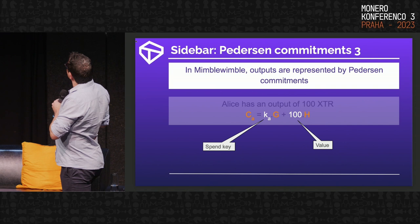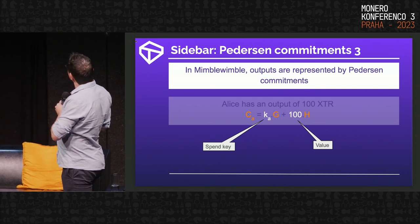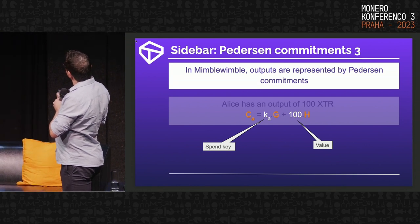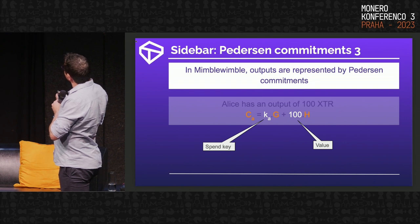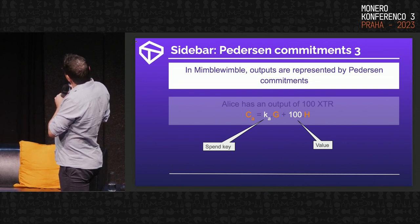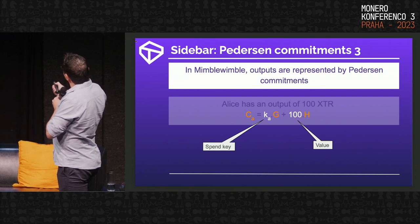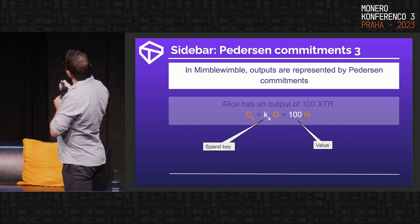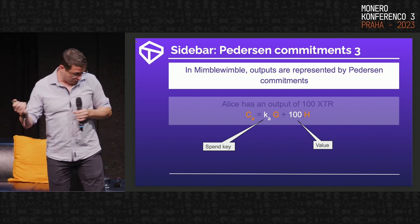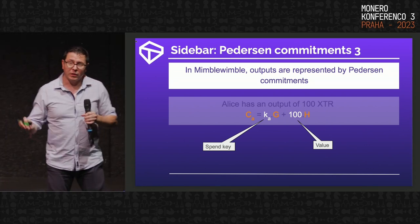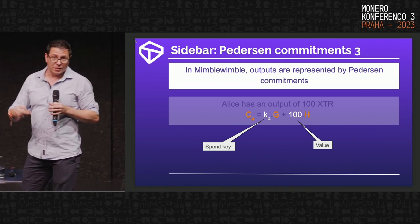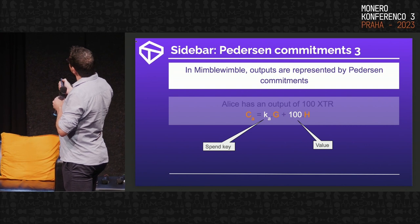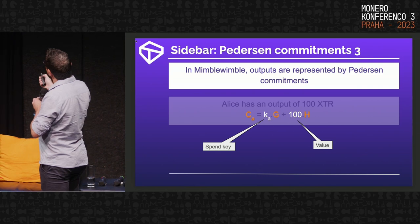A Mimblewimble output is represented by a commitment: the sum of a spend key times G plus a value times H. The spend key is what lets you spend the output. What we expose on the blockchain is just the sum. Once I've added these two together, there's nothing you can do to separate them — it's like saying two numbers in my head add up to a million: what are the two numbers? The sum here goes up to an astronomically huge number, so there's no practical way of separating them.